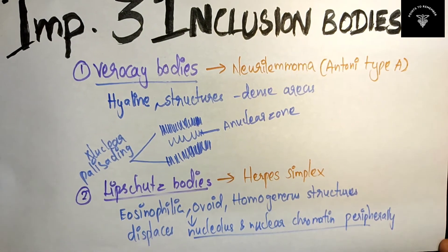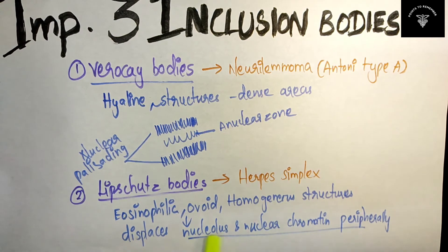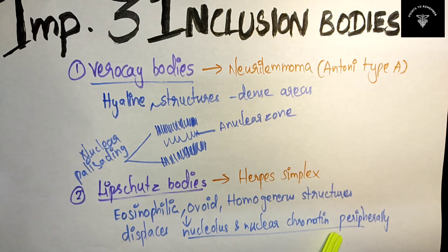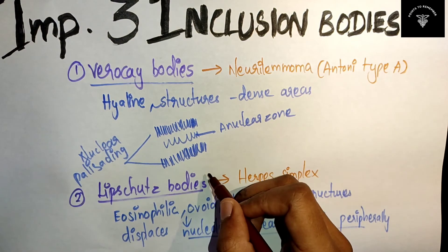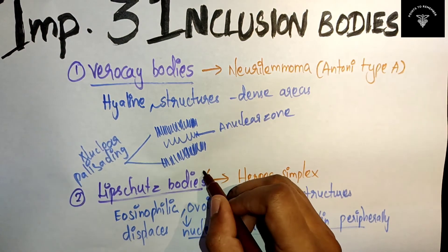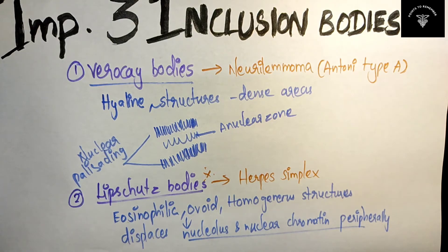Lipschutz bodies are eosinophilic, ovoid, homogeneous structures which displace the nucleolus and nuclear chromatin peripherally. These are the second most important inclusion bodies.